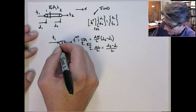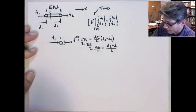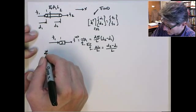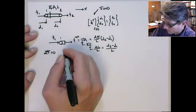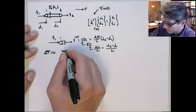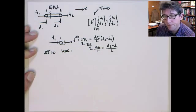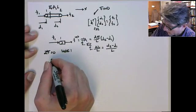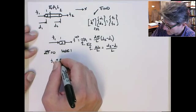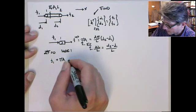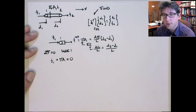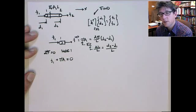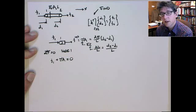So if we look at the sum of forces on node 1 again... F equals zero for node 1. This will give us F1 plus sigma A is equal to zero. They're all acting to the right, so they're both positive. So that's the force balance on node 1.